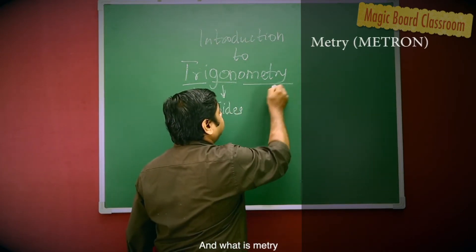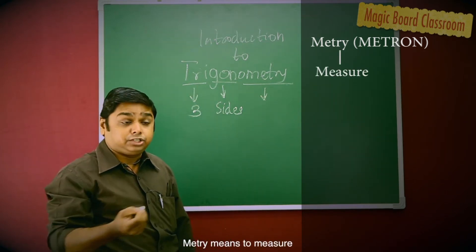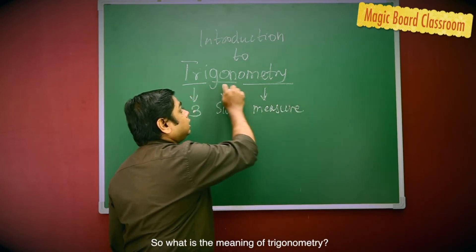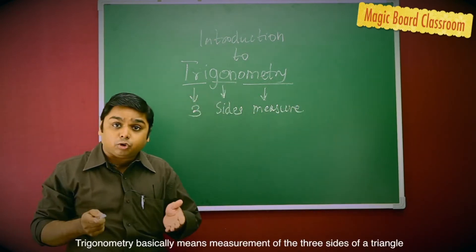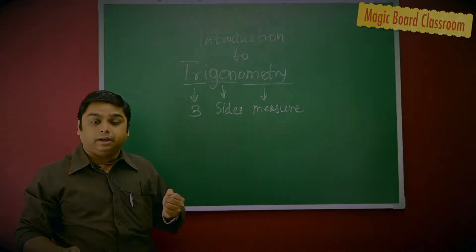And what is Metry? Metry means to measure. So, what is the meaning of Trigonometry? Trigonometry basically means measurements of three sides of a triangle.